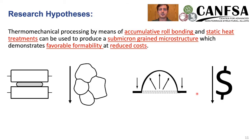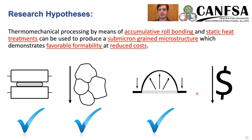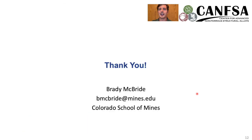To conclude, we're able to use accumulative roll bonding to reduce the grain size and achieve low temperature superplasticity. We're now trying to fully characterize this material and understand its limitations and applications. I'd like to leave you with my contact information and I'd be more than happy to answer any questions you may have.